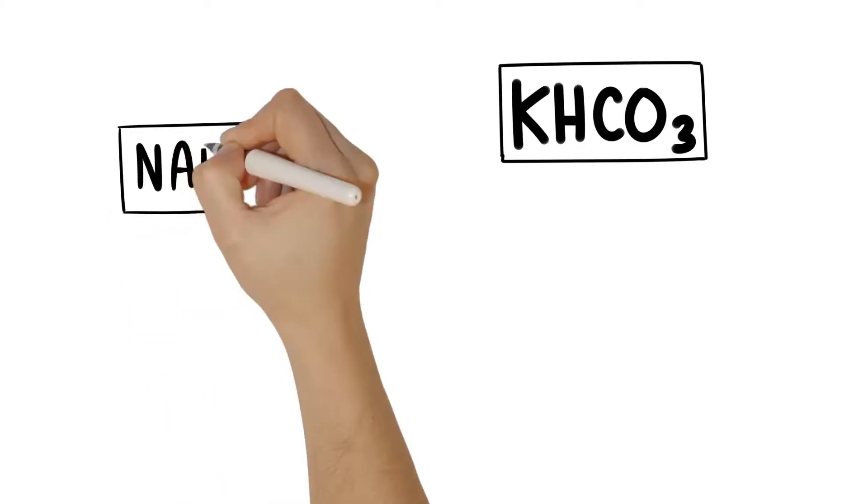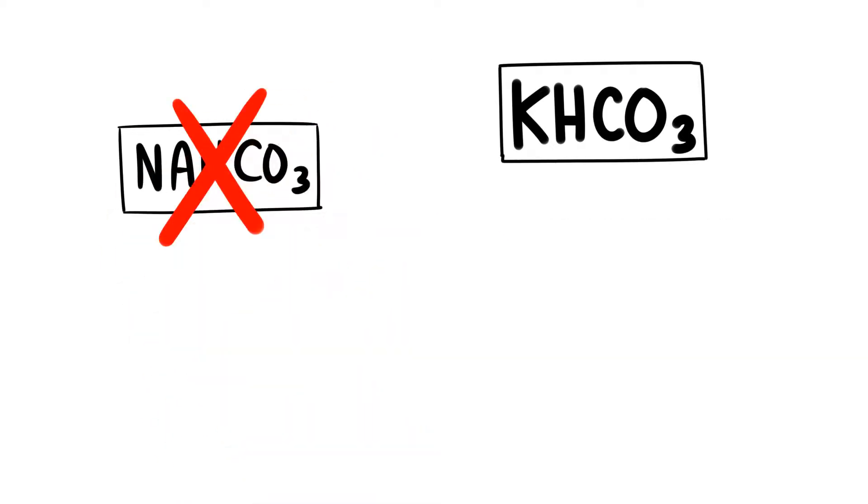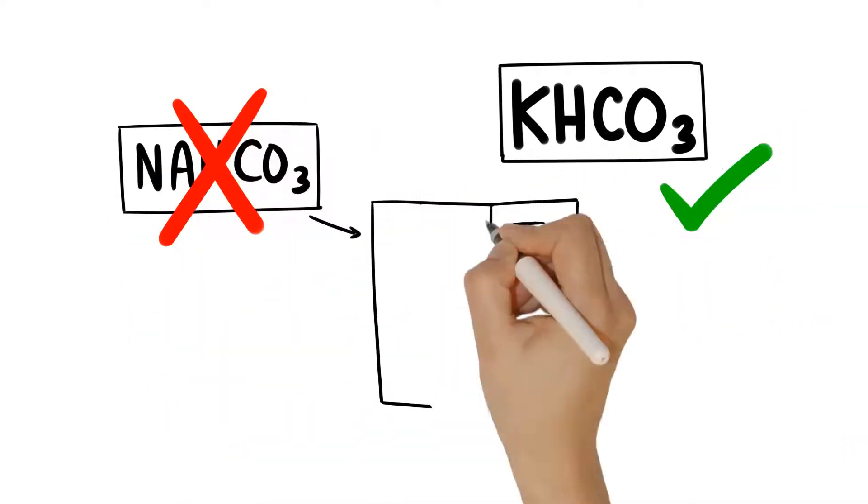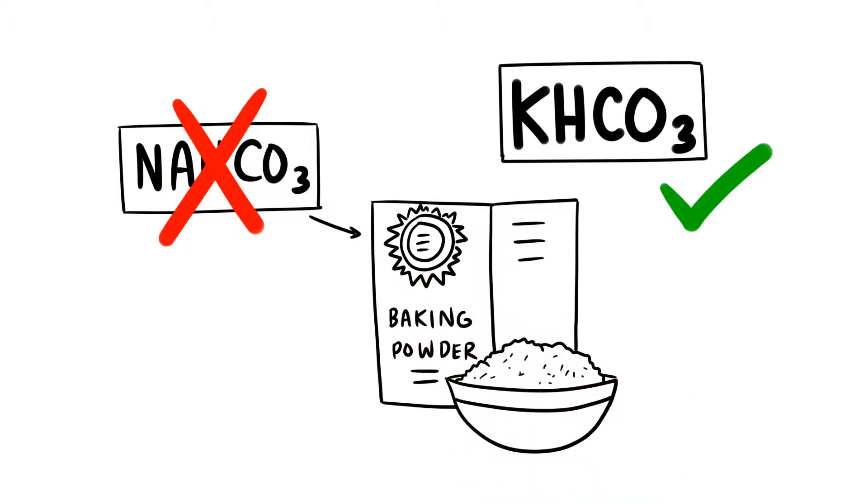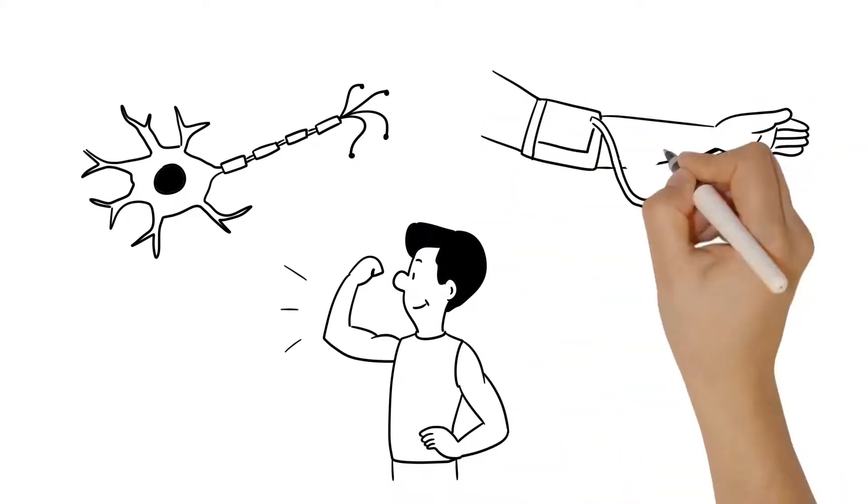By replacing sodium bicarbonate in baking powder with our potassium bicarbonate, bakeries help customers achieve the right physiological electrolyte balance. This improves nerve function, muscle contraction, and reduces blood pressure.